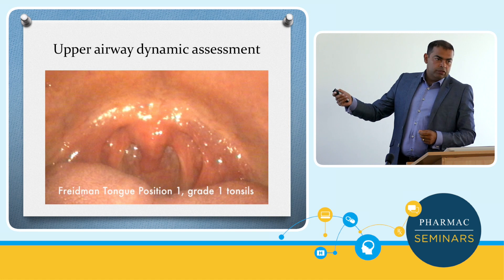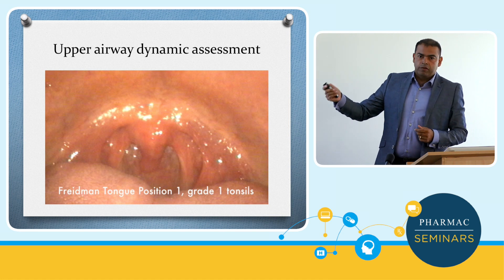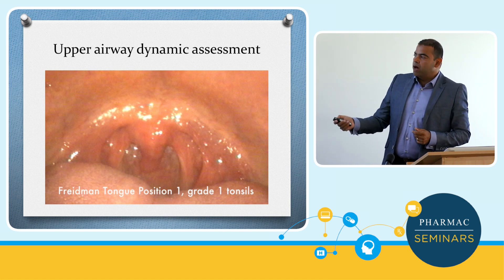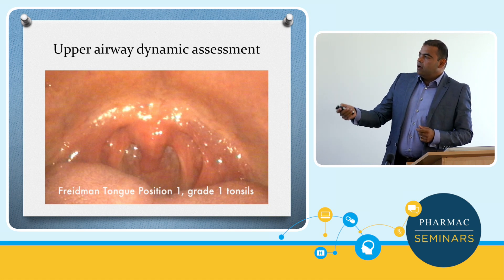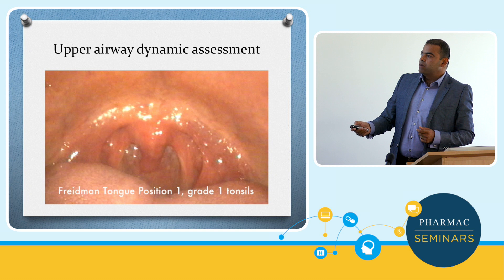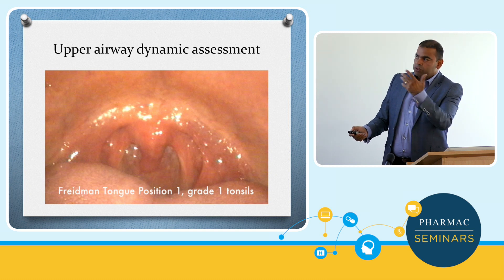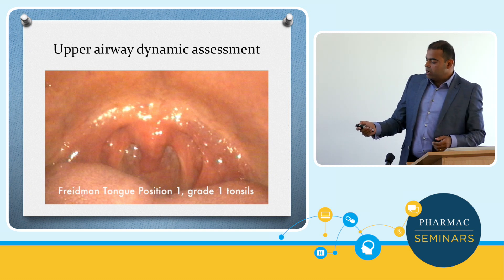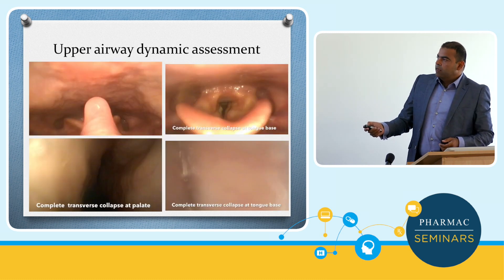This is an example of a patient of mine. We are looking at Friedman tongue position of 1, and you can see the tip of the uvula nicely, and kind of grade 1 tonsils, maybe grade 2 — at least he was referred as a grade 1 tonsil.